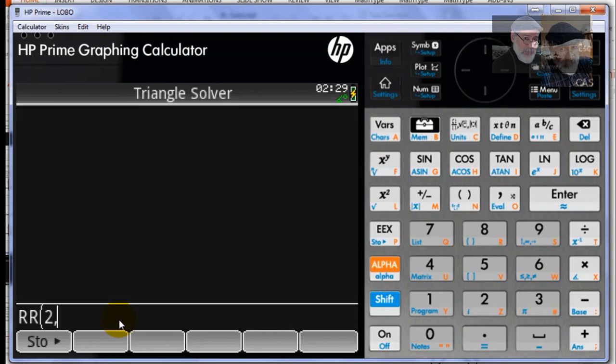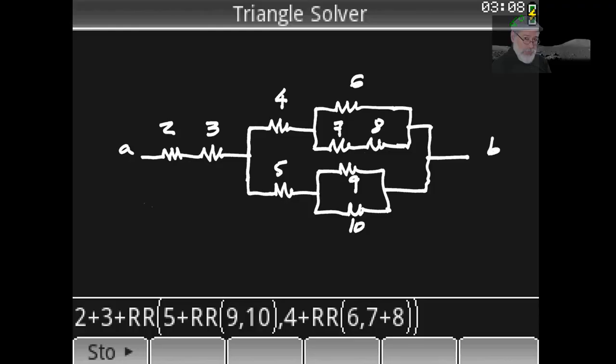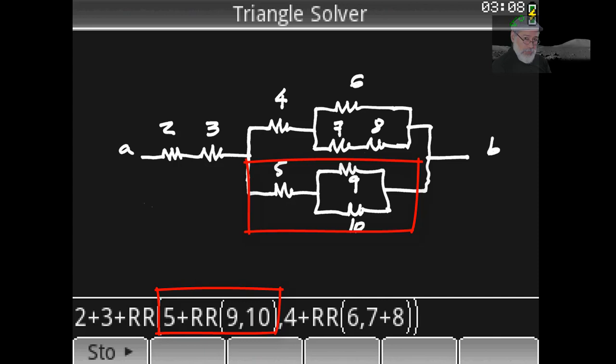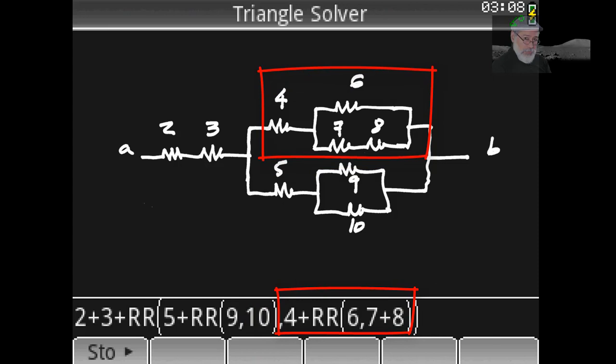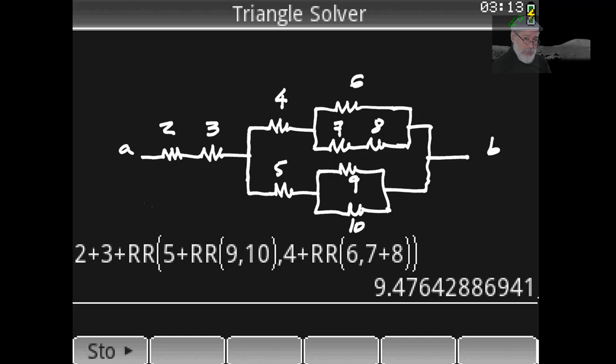Let's use that in this exercise. What is the equivalent resistance of the group of resistors below? All resistances are given in ohms. That is simply two in series with three, in series with a parallel of one group at the top and one group at the bottom. The group at the bottom is five in series with the parallel of nine and ten, and that's going to be in parallel with four in series with a parallel of six and the series of seven and eight. Type enter. All of those resistors are equivalent to approximately nine and a half ohms. Nice.